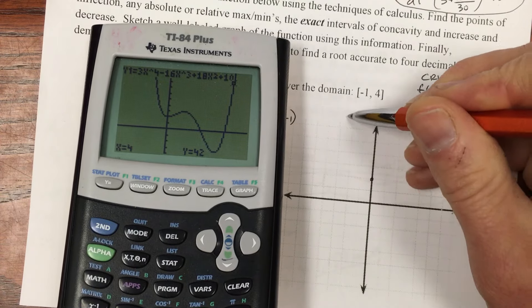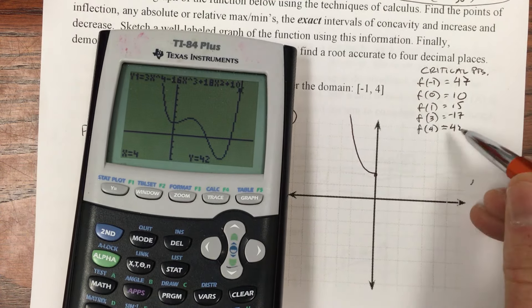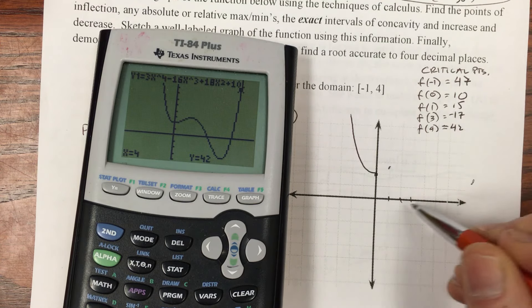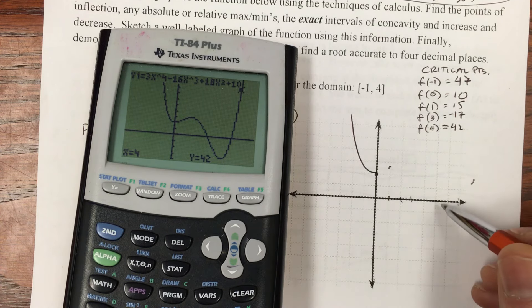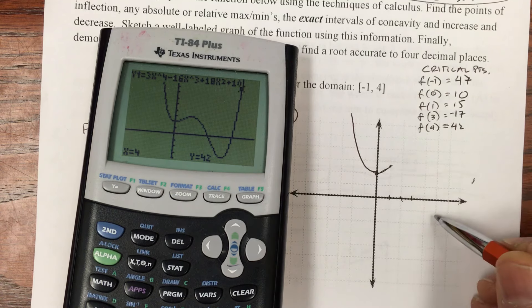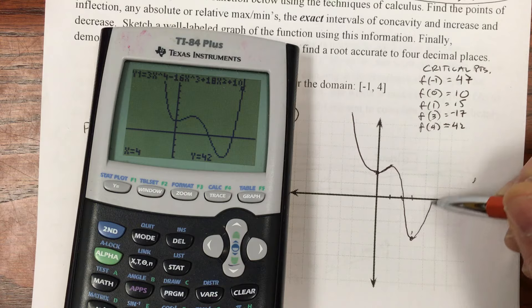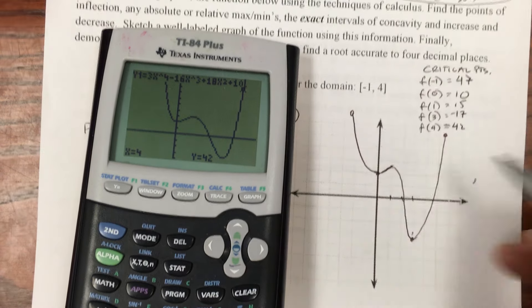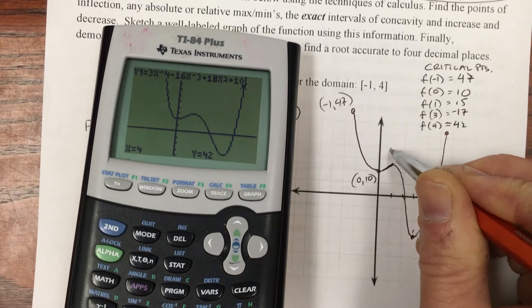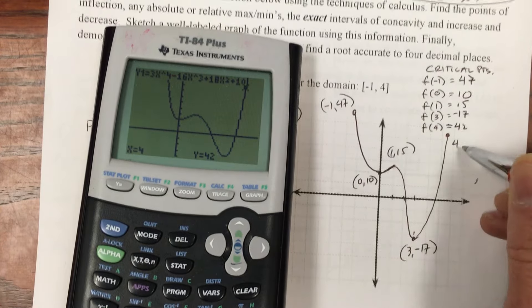And it seems to make a lot of sense. I like the fact that we can hit the trace button and put in these values. So I can put in -1 and get 47. And 0 is 10. And 1 gives 15. And 3 is -17. And 4 is 42. So to sketch this, that's 10. It's obviously coming down. Then it goes up. At 1, it's 15. At 3, it's negative 17. And then it turns around and goes up like that.